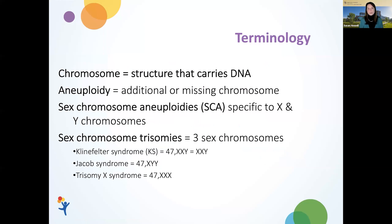When we talk about the term aneuploidy, we're talking about additional or missing chromosomes in the cell. So sex chromosome aneuploidies, or SCAs, are additional or missing chromosomes that are specific to the X or Y chromosomes. And when we talk about sex chromosome trisomies, we're talking about the presence of three sex chromosomes in the cell.